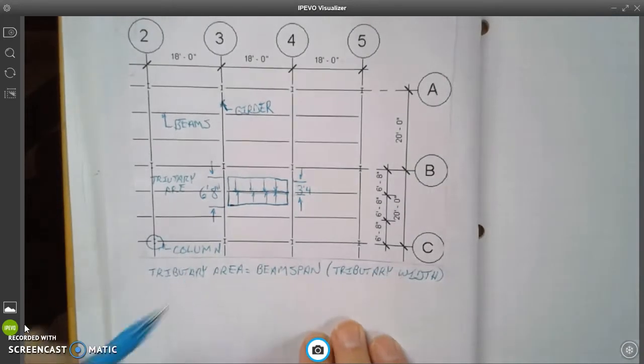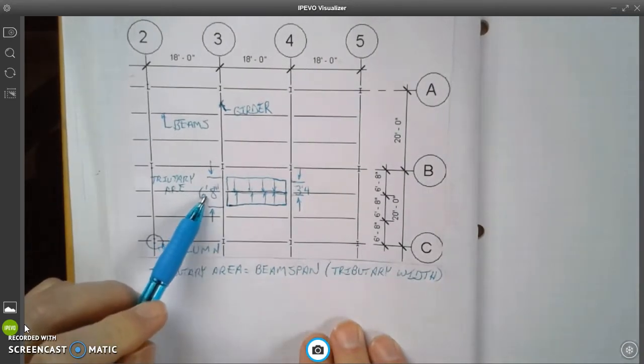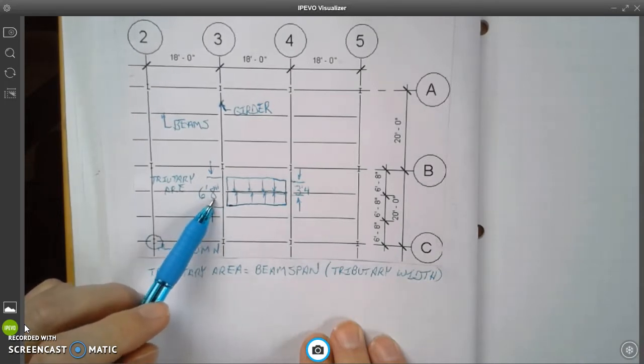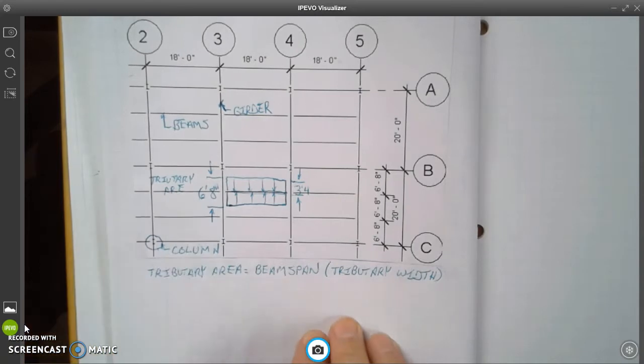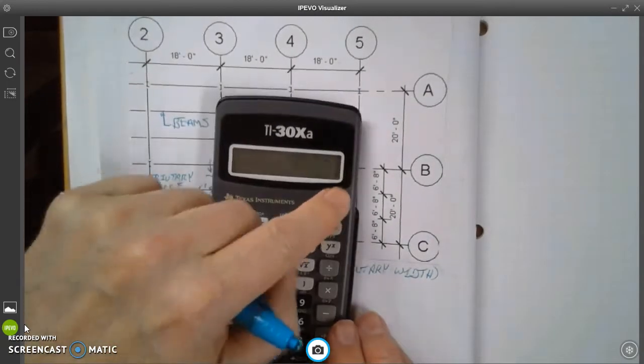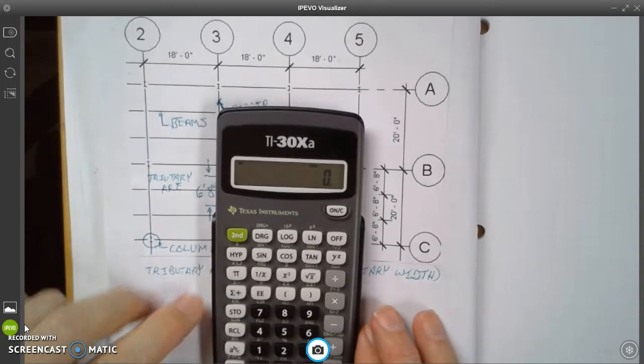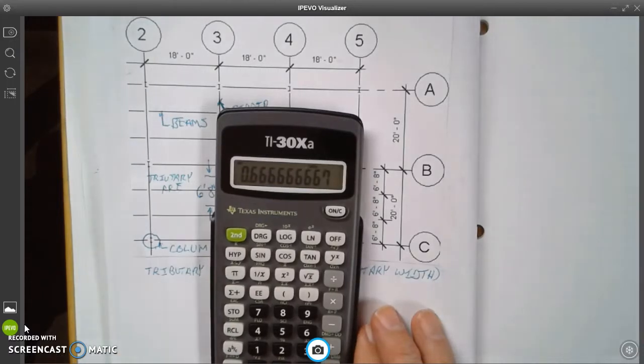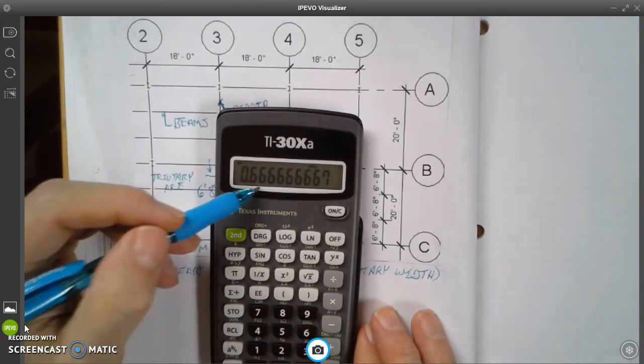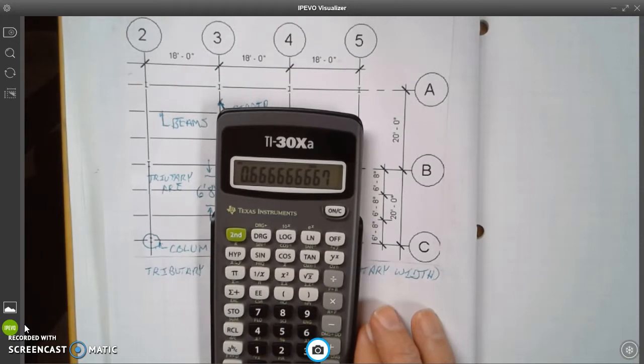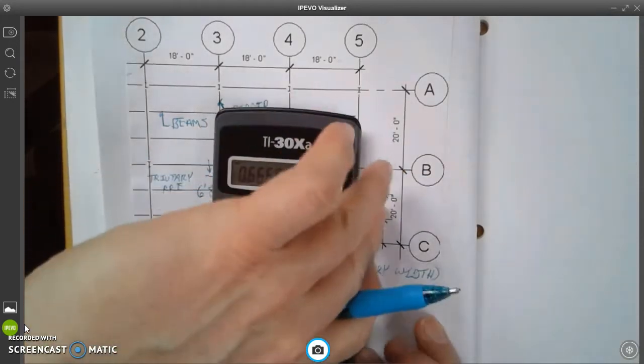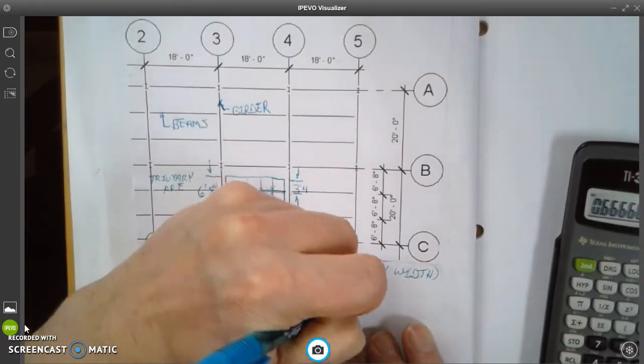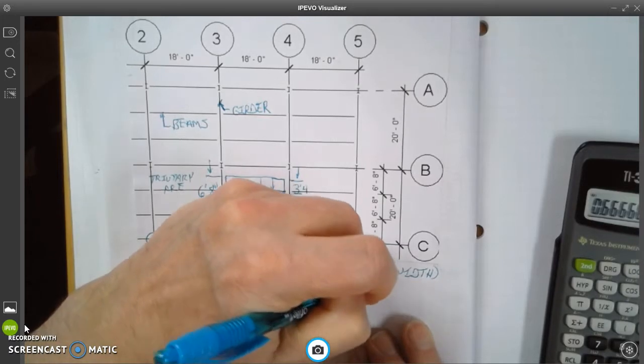Now when we look at our tributary width here, it's 6 feet 8 inches. This has to be converted to a decimal. So you do that by taking our calculator and we're going to take 8 inches, we're going to divide that by 12. There are 12 inches in a foot and we get 0.66 repeating. So we're going to round that to two decimal places, so we're going to make that 6.67 feet.